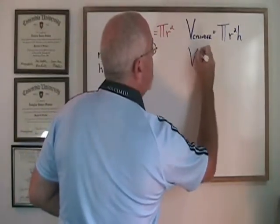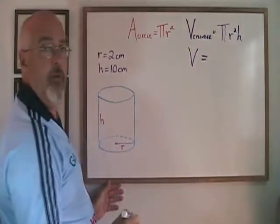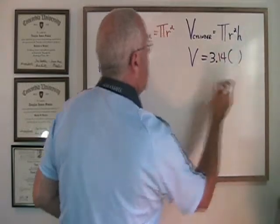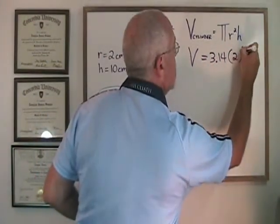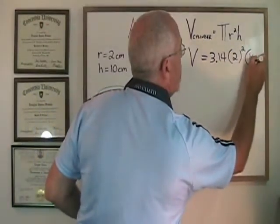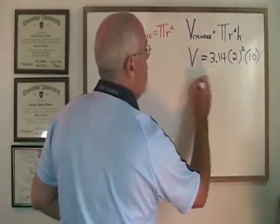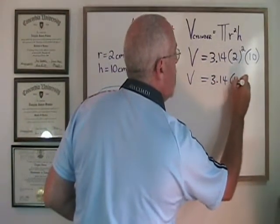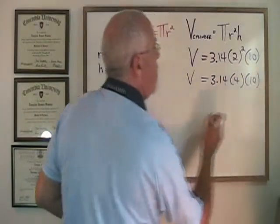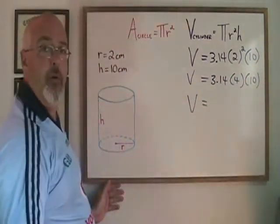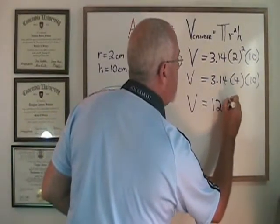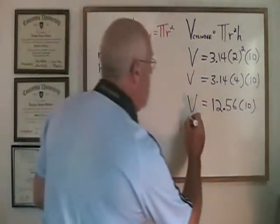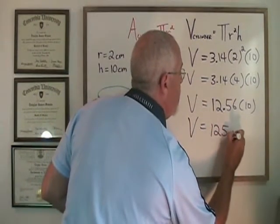For these examples, we'll use 3.14 as our approximation of pi. r is 2 and is squared and h is 10. 2 squared is 4. 3.14 times 4 is 12.56 and 12.56 times 10 is 125.6.